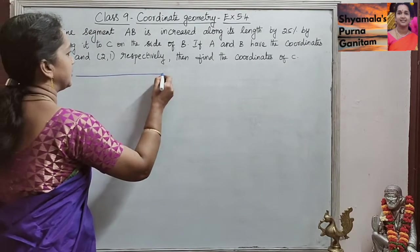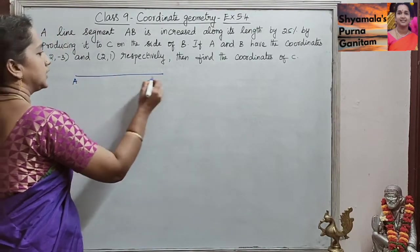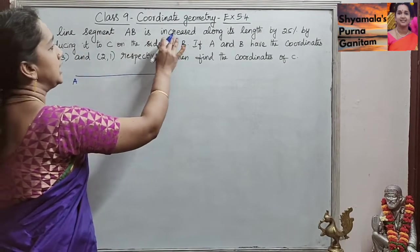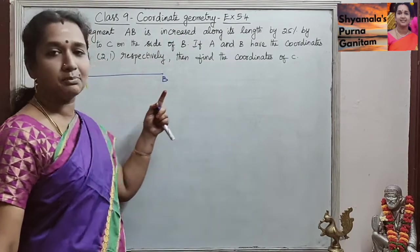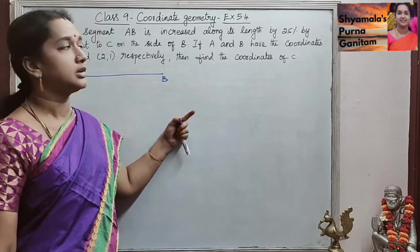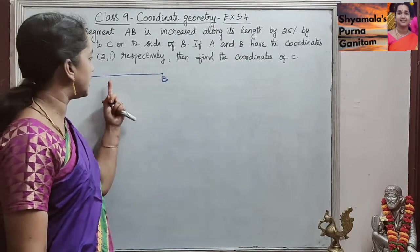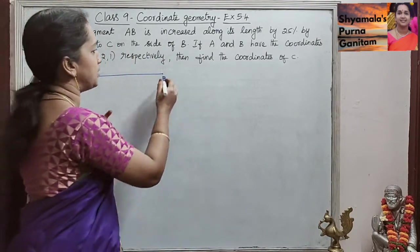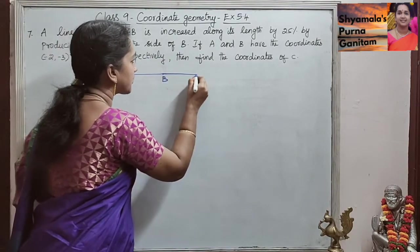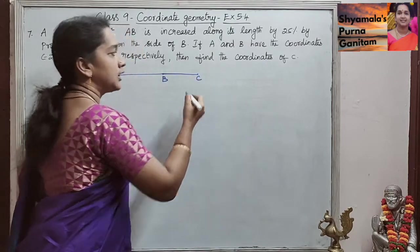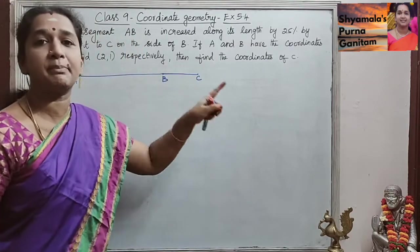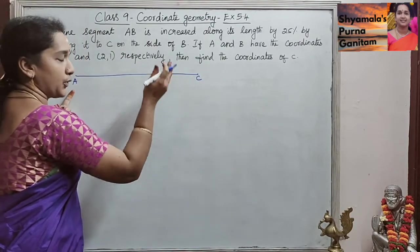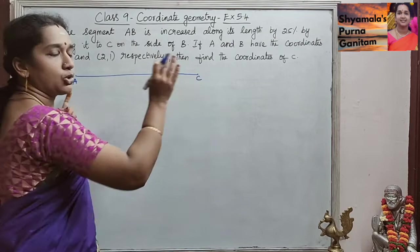So a line segment AB is given and the coordinates of A and B are given. It is increased along its length by 25%, producing it to C on the side of B — that is, from B they are producing it to C, increasing by 25%. So we are asked to find the coordinate point of C.